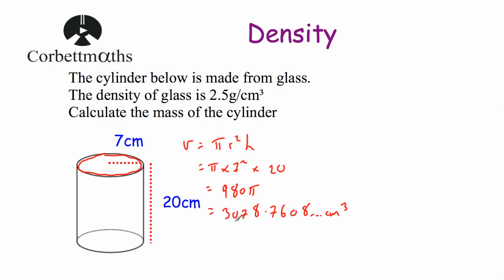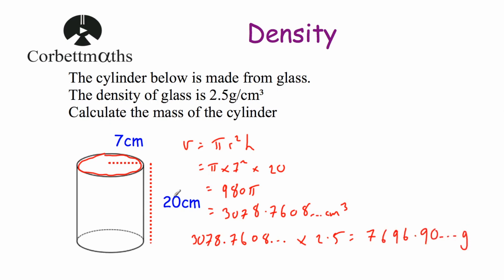So this cylinder has a volume of 3078.7608... centimetres cubed. We know each centimetre cubed of glass has a mass of 2.5 grams, so we multiply 3078.7608... by 2.5. That gives us 7696.90... grams. Rounding to one decimal place, the mass of the cylinder is 7696.9 grams.